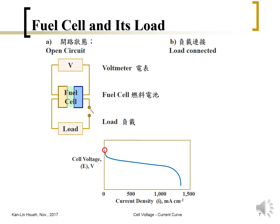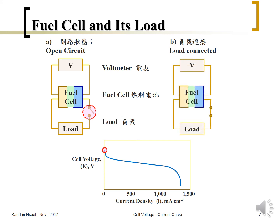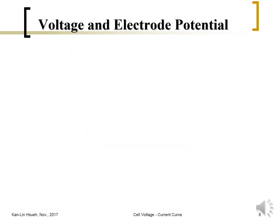For the fuel cell at open circuit stage, we connect a voltmeter and an electronic load, with the circuit open. The voltage measured is the open circuit voltage. We use the voltmeter to measure voltage and an ammeter to measure current divided by the electrode area to get current density. When the circuit is closed, we change the load and measure the voltage and current flowing through the load.